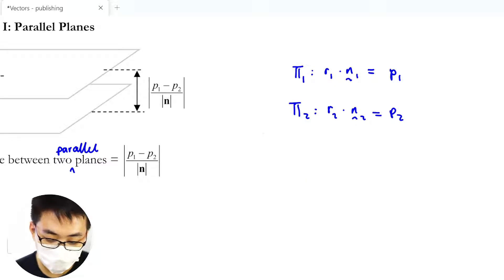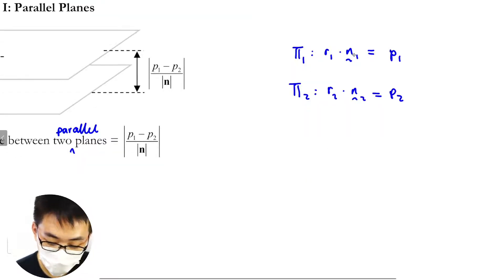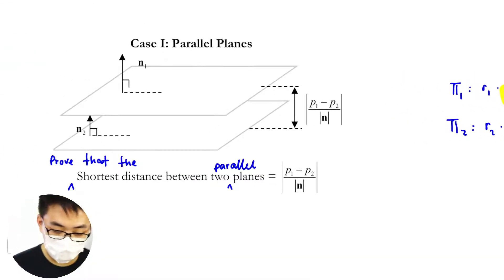Let it be the same normal and do that. So usually they will let you know this is n, meaning to say these two ends are the same. Okay so I'm going to use n.